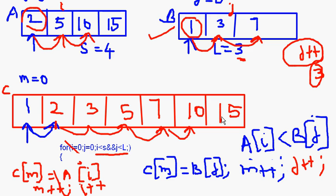This is the logic for merge sorting. The important things to remember: the for loop performs the merging with the condition i less than s AND j less than l; inside the loop, compare a[i] with b[j] and put the smaller element into C; if you put an element from A, do m++ and i++; if from B, do m++ and j++. In the next session, we'll do the full program for merge sorting — merging two ascending-order arrays into a third array in ascending order.